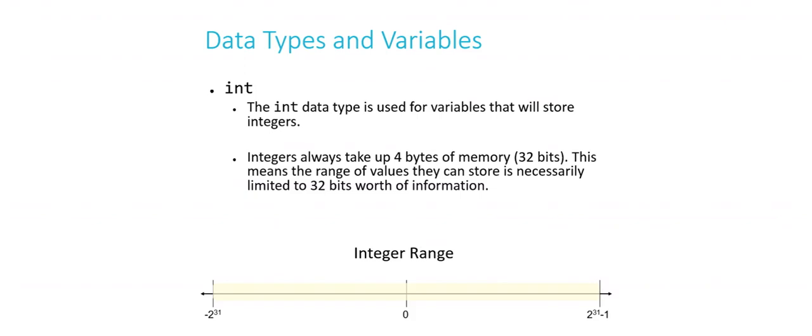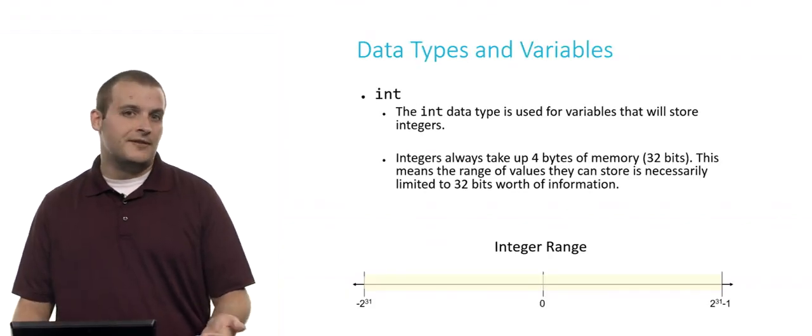So basically, half of the possible values that you can fit in an int are negative, and half are positive. And roughly here, this is about negative 2 billion to about positive 2 billion, give or take a couple hundred million. So that's what you can fit in an integer variable.